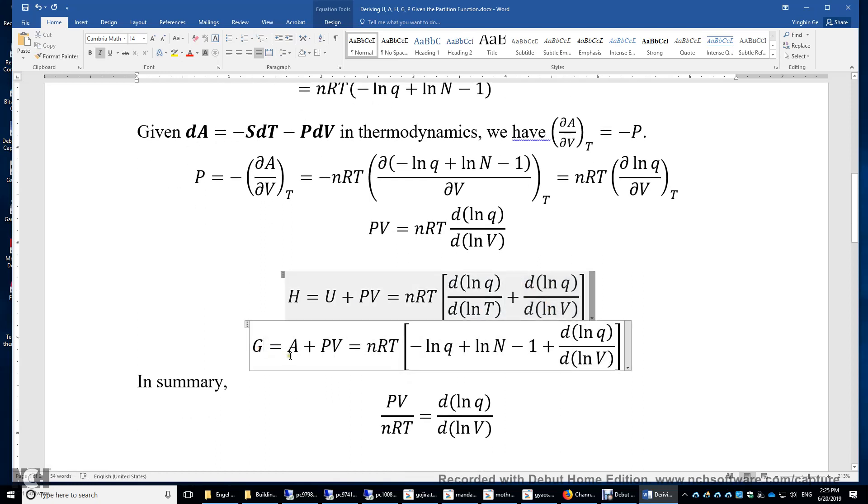Now let's get G. G equals A plus PV, or H minus TS. So G equals nRT times this part that will give you A and this part that will give you the PV. And together, we have the expression of G.